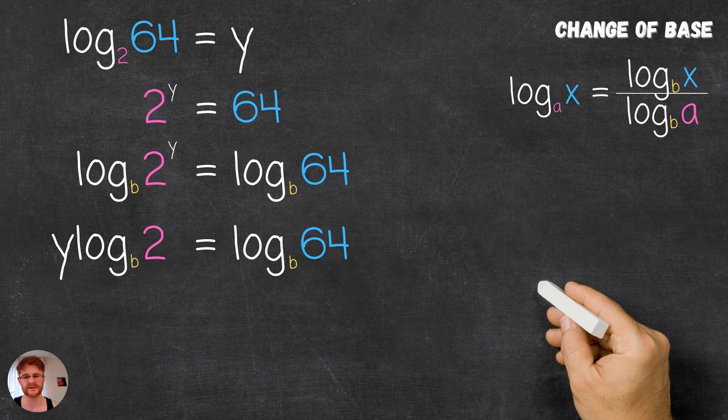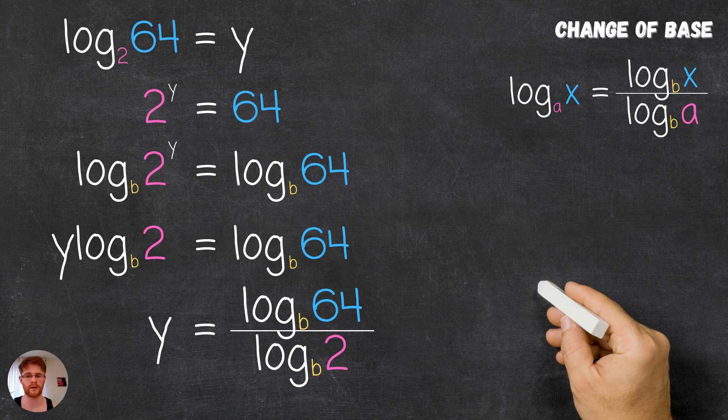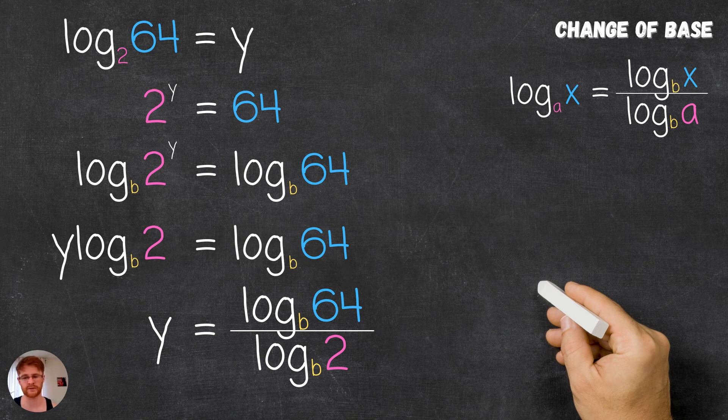We can see that dividing both sides of this equation by log base b of 2 will give y equals log base b of 64 over log base b of 2, where b is our arbitrary base of choice.